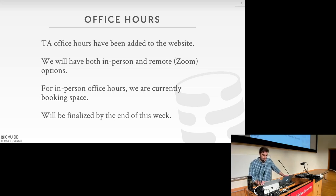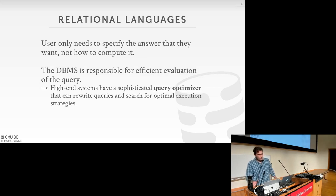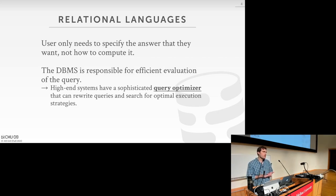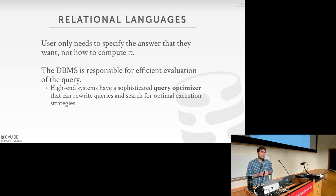Now let's move on to the content — relational languages. Last week we talked about the relational model and relational algebra. The key idea was that we wanted to avoid having to tell the DBMS exactly how to execute a query. Rather than specifying steps to execute a query, we wanted to provide a high-level declarative specification so that the DBMS would be able to figure out how to do it for us — saying what answer you want rather than how to get it.